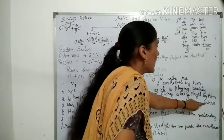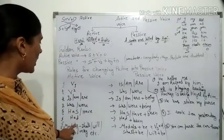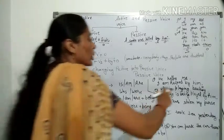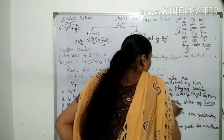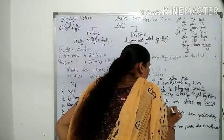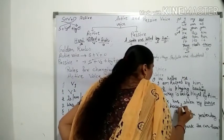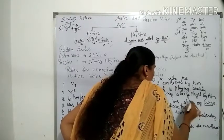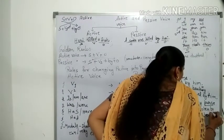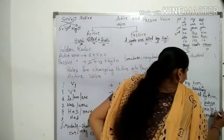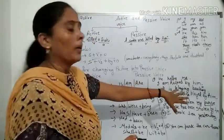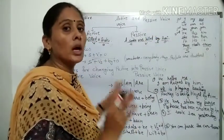Example: He has stolen my purse। Has/have/had के साथ 'been + verb की third form' लगती है। My purse हमारा object है और he हमारा subject है। तो my purse आगे आएगा और subject बन जाएगा। My purse has been stolen by him। He का object 'him' हो जाएगा। यदि she होता तो her, यदि I होता तो me, यदि we होता तो us।